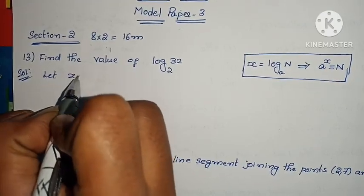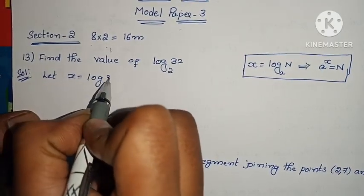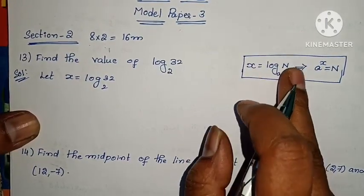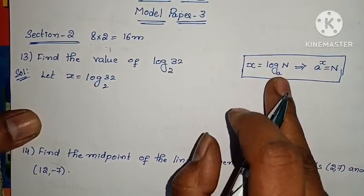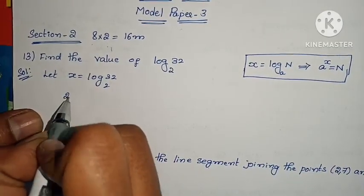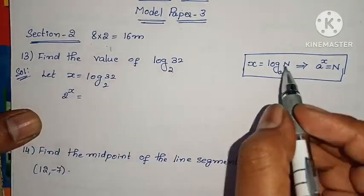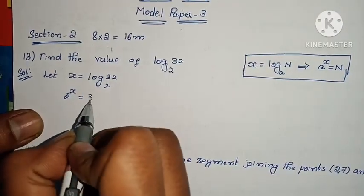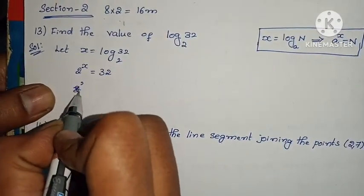Let x equals to log 32 base 2. This is a model on x equals to log n base a, which means a power x equals to n. Here, a is 2, so 2 power x equals to 32.